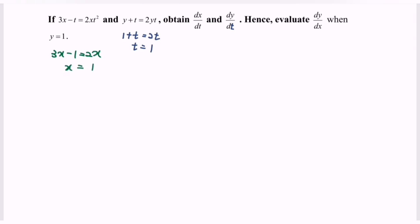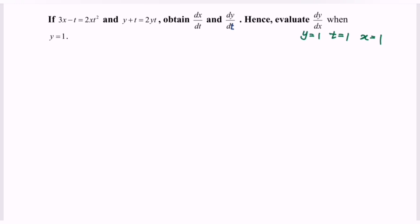So as a conclusion, when y equals 1, t equals 1, and x also equals 1. Before we begin our discussion, kindly state the formula for the product rule: y prime equals v·u prime plus u·v prime.